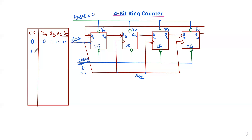When you apply clock pulse one, the first flip-flop is activated. The initial value is zero. The characteristic equation of a D flip-flop is Q_next equals D. So the next state is equal to D. When D is equal to zero, the output D is equal to zero.